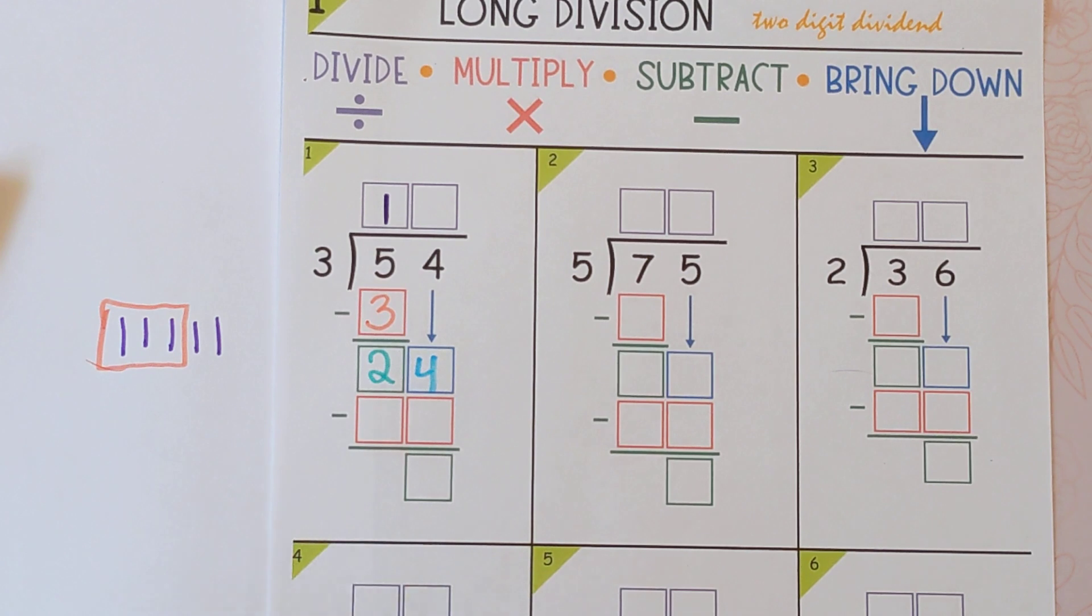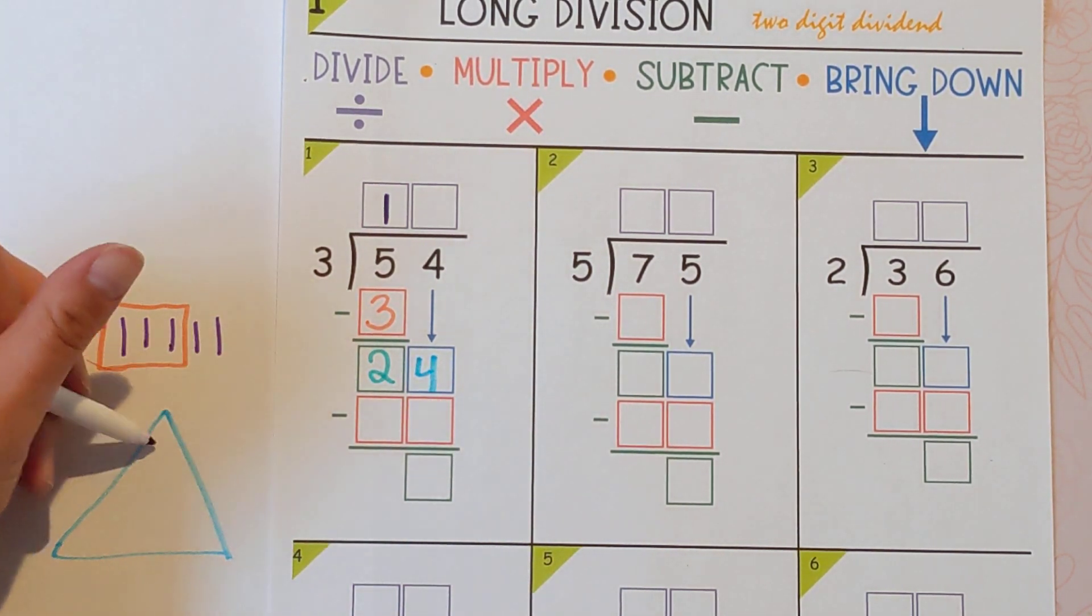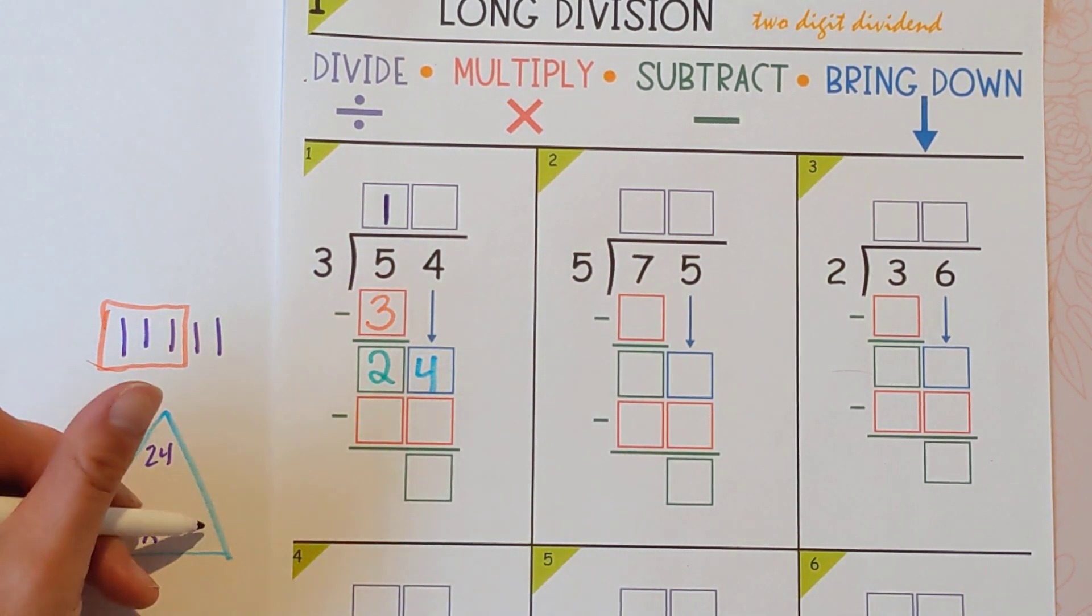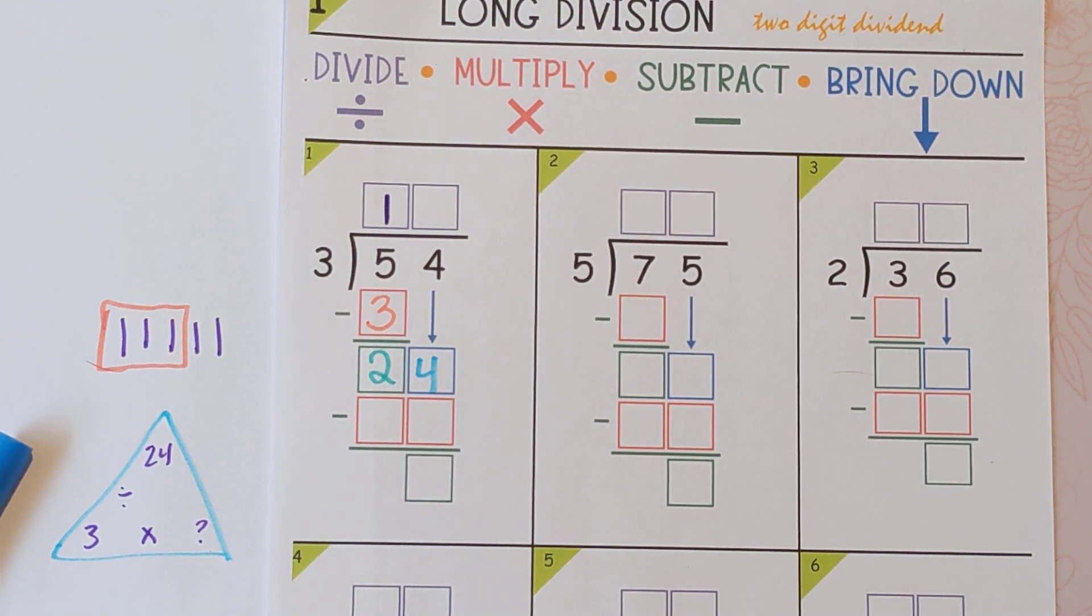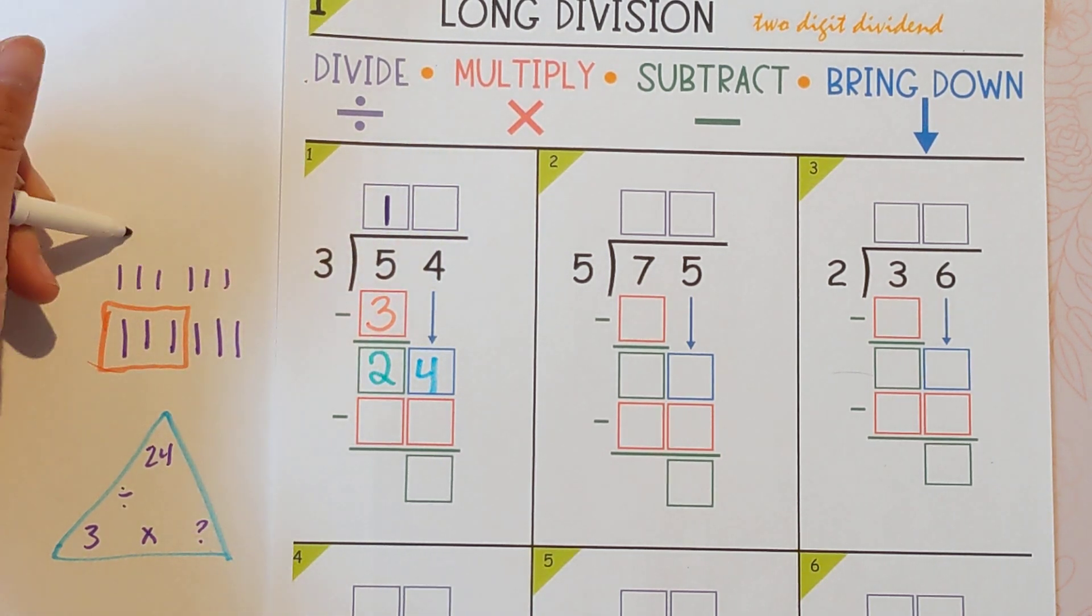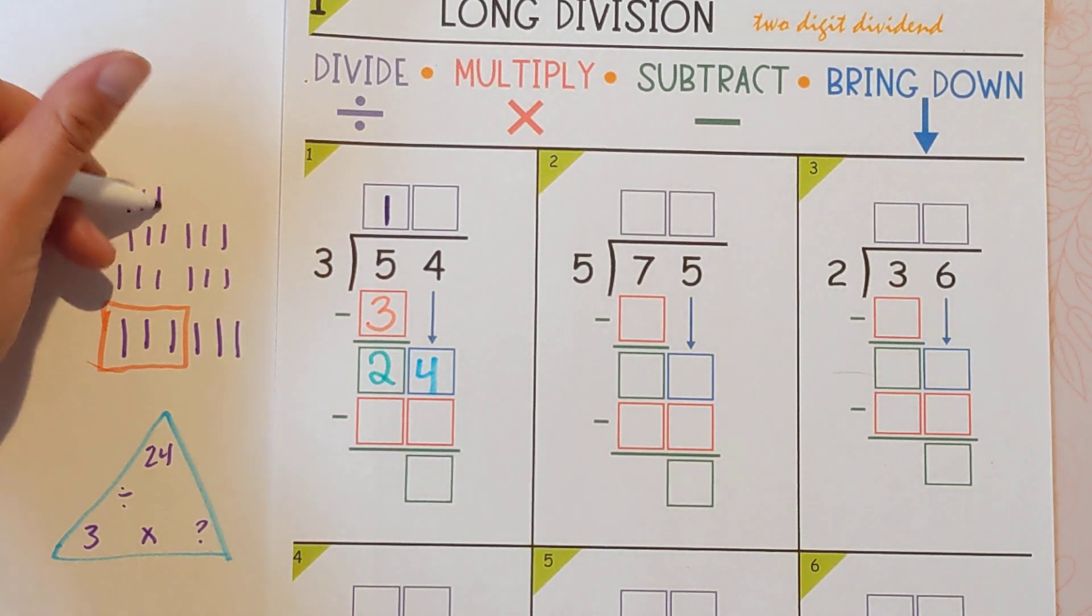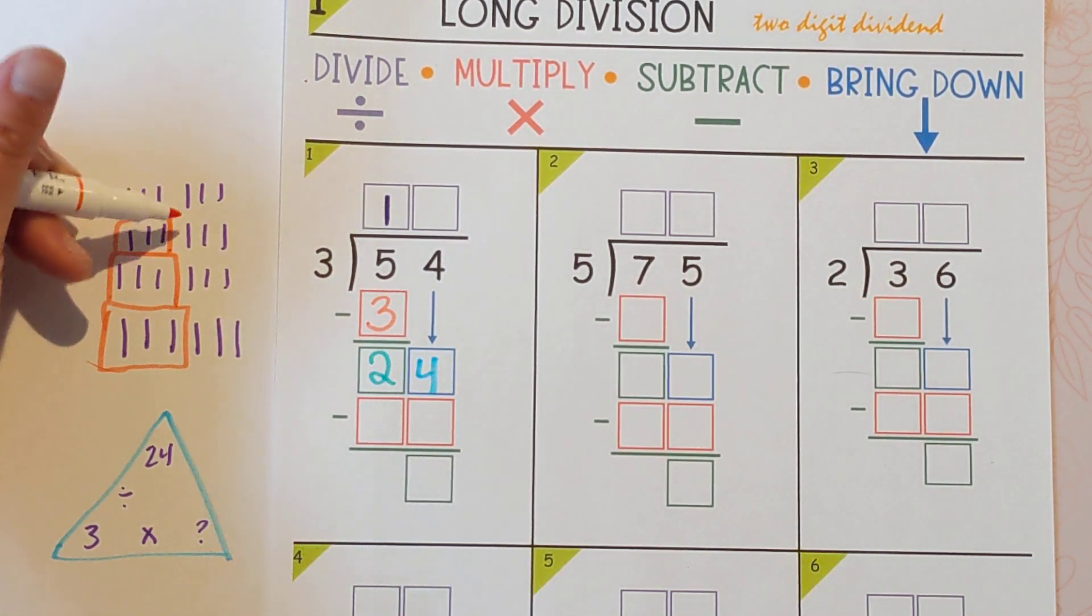Now 24 is actually a multiple of three. So you can just do 24 divided by three and see what you get. You could also draw 24 of these little marks and see how many groups of three you could make. So there's 24 tally marks right there. And you could divide it up into groups of three and see how many groups you get.